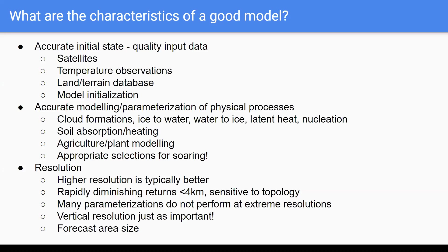Most people only refer to horizontal resolution — they say a model is three, five, or ten kilometers. But for gliding, the vertical resolution — how many vertical layers there are in the atmosphere — is actually much more important. Within SkySight we might have a layer at two meters, ten meters, fifty meters, one hundred meters, three hundred meters, and so on, getting further apart as you go higher. The number of layers within the boundary layer — the turbulent layer near the earth where we're flying — is really critical for soaring weather, and that's something we've focused on.